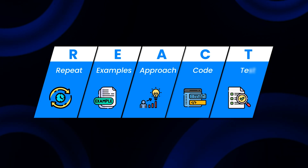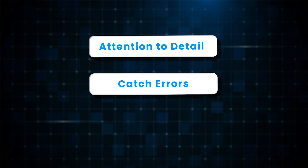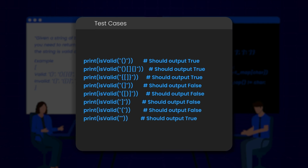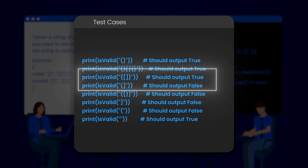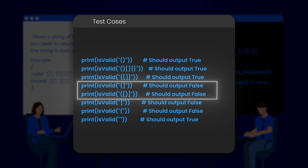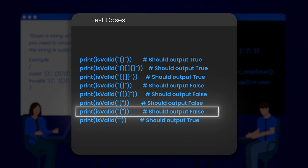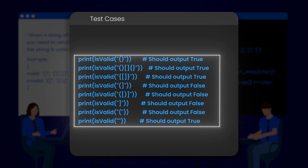Let's move on to the last step, which is T for Testing. Always test your code against the examples you discussed earlier. This step is important: it shows attention to detail, it can catch errors you might have missed, and it gives you a clear idea of how well you did. As I run through tests, I explain each case: 'The first three cases check valid strings with different combinations of brackets. The fourth and fifth cases check invalid strings where brackets don't close in the correct order. The sixth case checks for an extra closing bracket, which should be invalid. The seventh case checks for an extra opening bracket, which should be invalid. And the last case checks an empty string, which should be valid.' By walking through these test cases, you show that your solution works as expected.